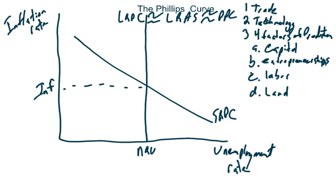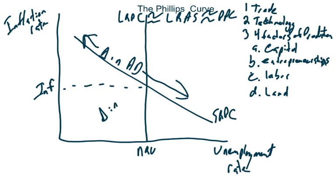What about the short-run Phillips Curve? When working with this graph, I would recommend drawing an aggregate demand and aggregate supply graph alongside it. Because if there is a change in aggregate demand, we do not shift the curve — we move along the curve; it'll be a point along the curve that we are moving. If there is a change in aggregate supply, that's when we shift the curve either to the left or to the right.